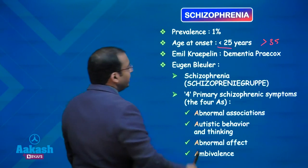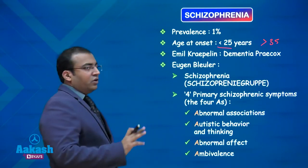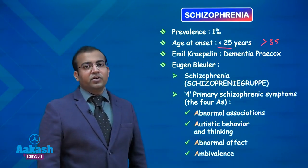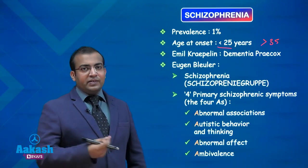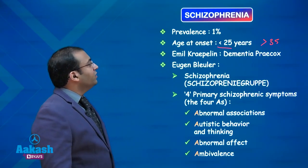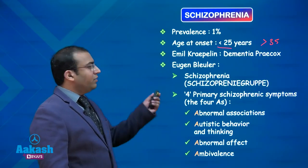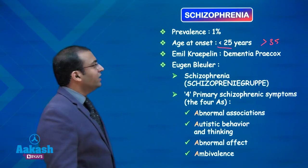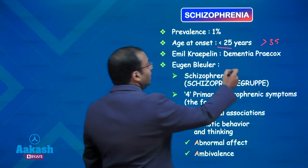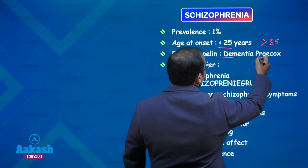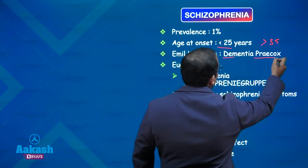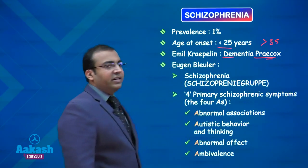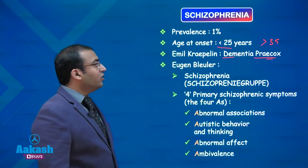There are two primary concepts behind the understanding of schizophrenia. The first is the Kraepelinian concept of dementia praecox, where he described it as a debilitating, deteriorating illness which starts early in age, and he termed it dementia praecox.